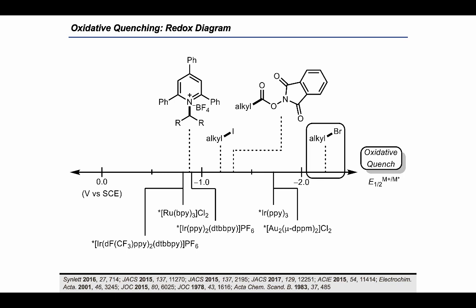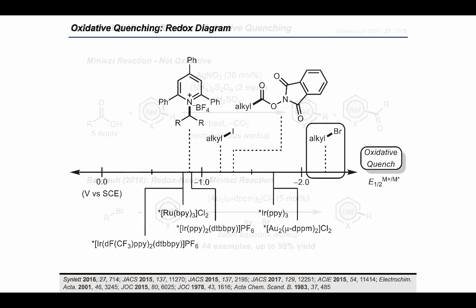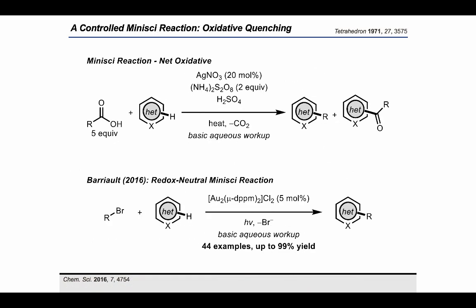An interesting challenge remains in effectively generating alkyl radicals from bromoalkanes, given their high reduction potentials and wide availability. The Minisci reaction has gained popularity as it offers an ideal test track for nucleophilic alkyl radical addition. The original reaction was first developed in the 1970s using a silver-catalyzed decarboxylation of carboxylic acids in the presence of stoichiometric persulfate as oxidant. Although the reaction was a breakthrough in obtaining medicinally relevant alkyl-substituted heteroarenes, the conditions can be considered harsh and often result in byproduct formation.